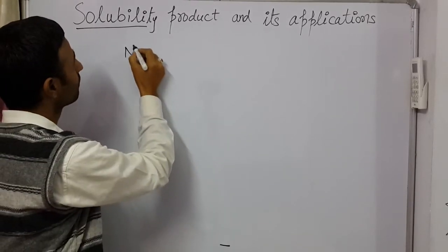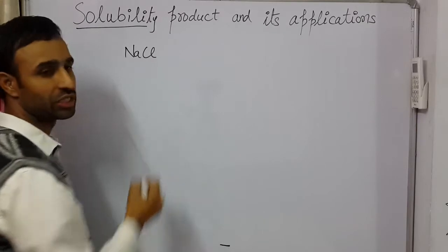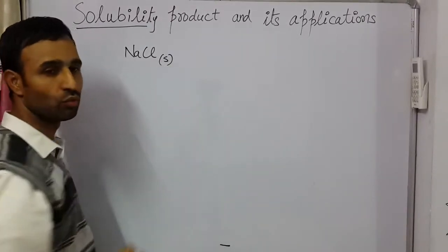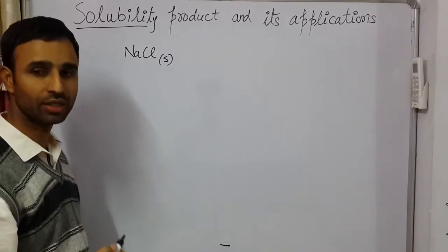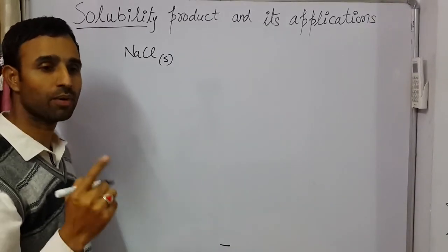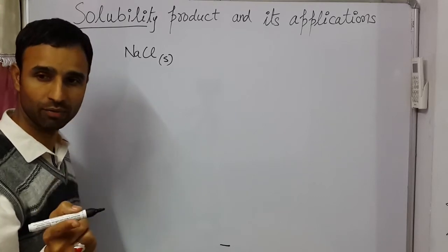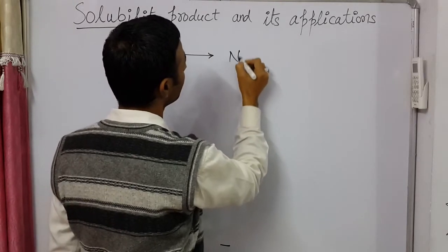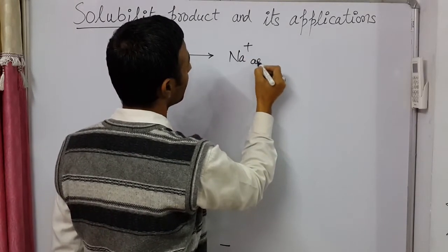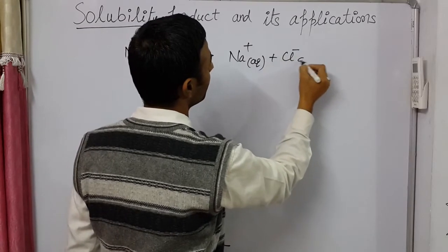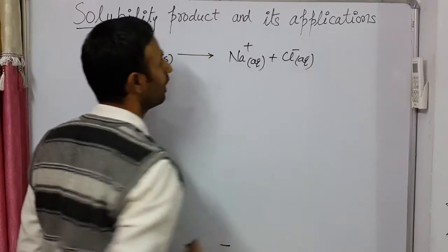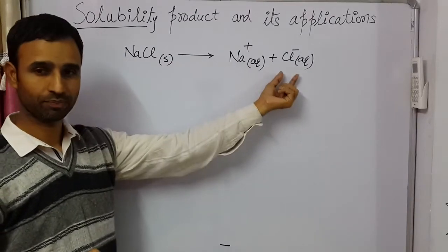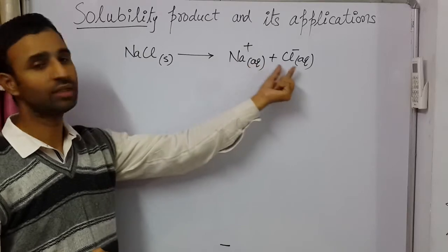For example, we have NaCl. If we dissolve NaCl solid in water, what would happen? It turns into Na+ and Cl− ions — that is, Na+ aqueous plus Cl− aqueous. Because NaCl when dissolved in water, it turns into Na+ ion and Cl− ion.